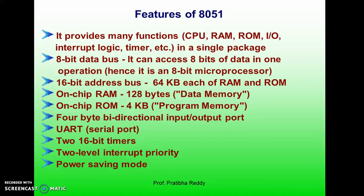It can access 8 bits of data in one operation; hence it is an 8-bit microcontroller. The size of the address bus is 16-bit, so the total addressable memory is 64KB, which includes both RAM and ROM. On-chip RAM is 128 bytes, called data memory, and on-chip ROM is 4KB, called program memory. It contains 4 ports — P0, P1, P2 and P3 — all 8-bit and bi-directional input-output ports. It contains one serial UART (Universal Asynchronous Reception and Transmission), two inbuilt 16-bit timers (Timer 0 and Timer 1), and two-level interrupt priority and power saving modes.